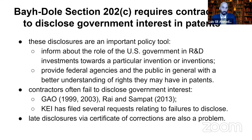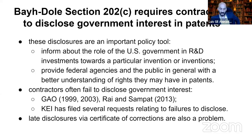These disclosures are an important policy tool because they inform the public about the role of the U.S. government in the research and development that led to a particular invention or set of inventions. They provide federal agencies and the public with a better understanding of the rights they might have around these publicly funded patents — things like marching rights, which is something that KEI has been heavily involved with, or royalty-free uses. We know that a particular patent is subject to those provisions if there is a government interest statement. At least, that's the easiest way to know.